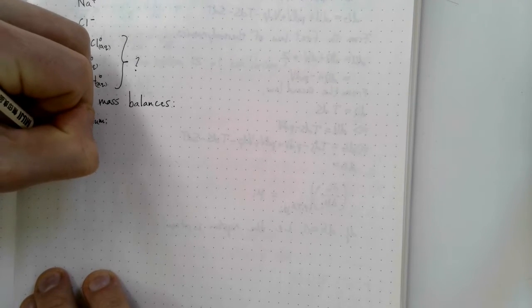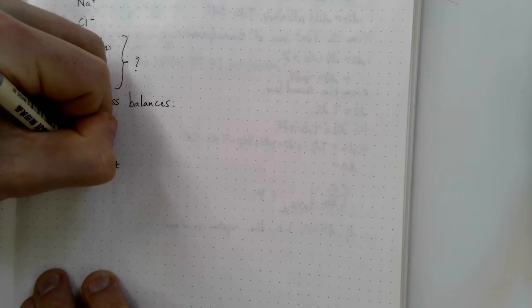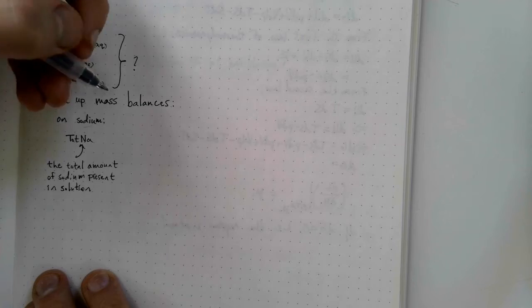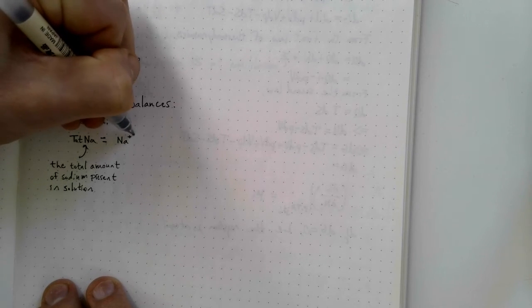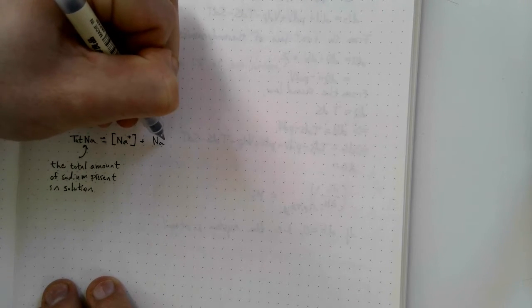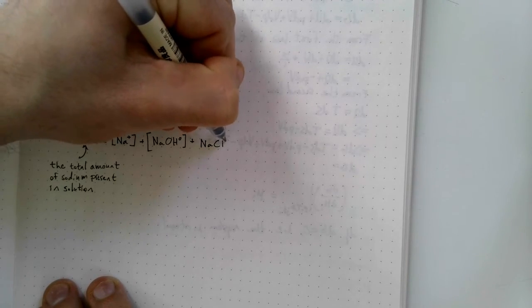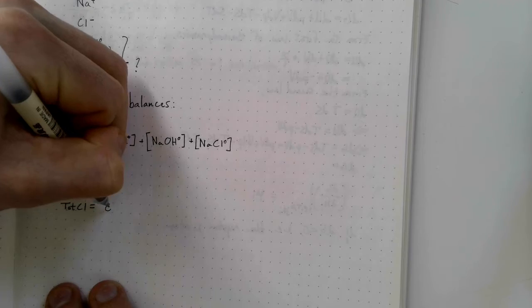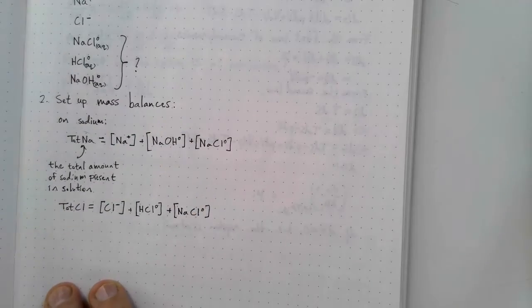The second step is to set up mass balances. I do my first mass balance on sodium and I define the variable tot Na, which is the total amount of sodium that exists in the system. Tot Na will be equal to the sum of the concentration of any sodium containing species. So that means sodium ions, sodium hydroxide dissolved as an undissociated pair, and sodium chloride dissolved as an undissociated pair. Likewise, I can define a variable for total chloride called tot Cl. Tot Cl will be equal to the sum of the chloride ions, the undissociated HCl and the undissociated NaCl in solution.